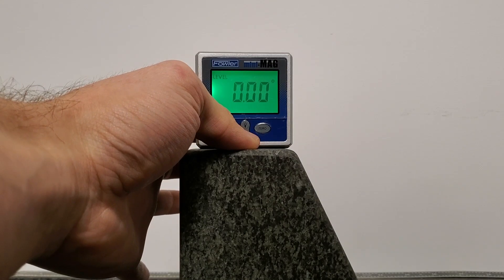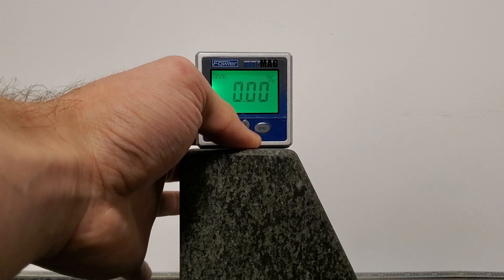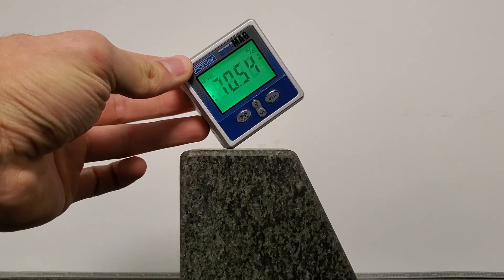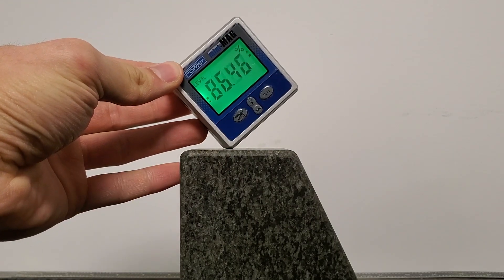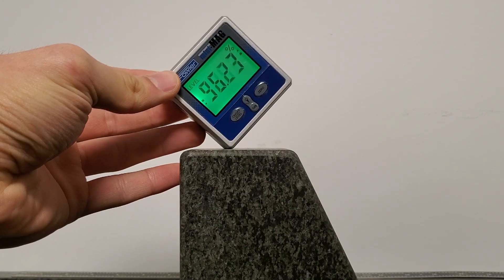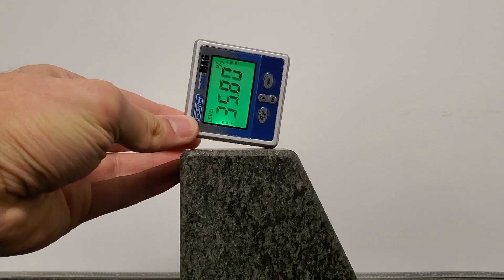Instead of an angle in degrees, it gives you the percent tilt from 0 to 45. A 45-degree angle is about 100%, and then it starts reading back down to 0 again.